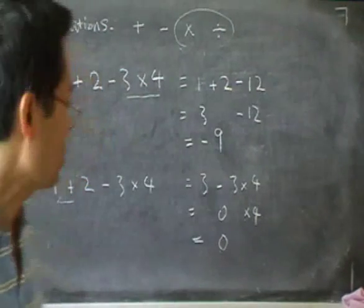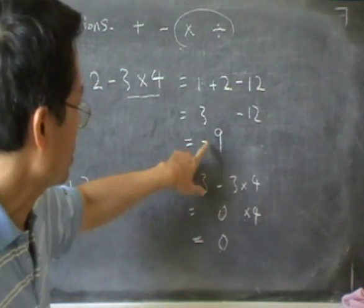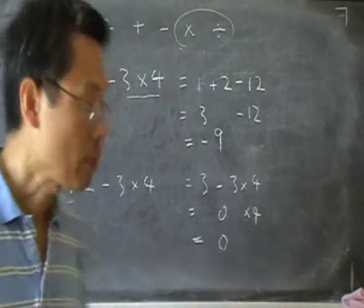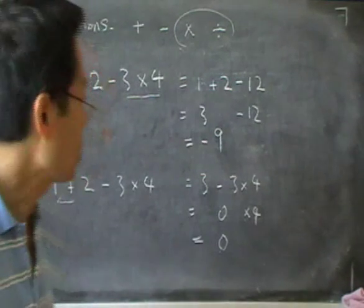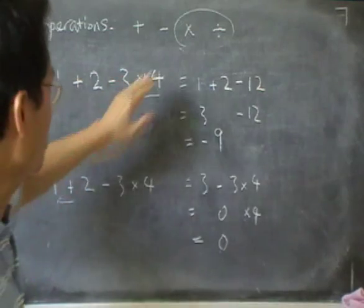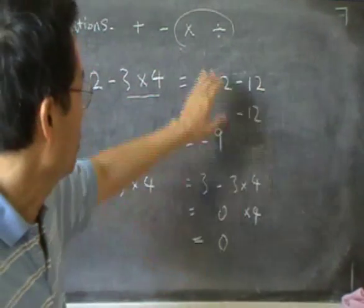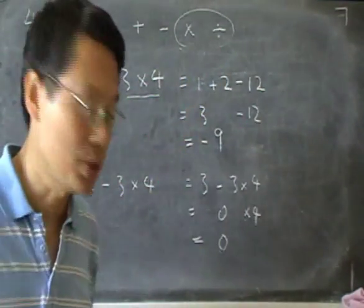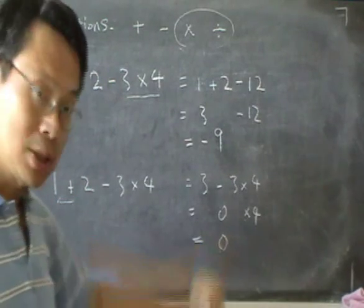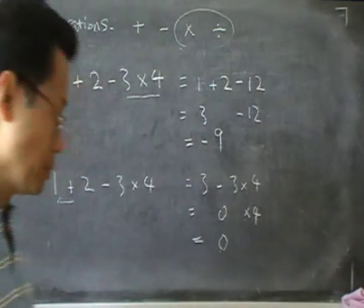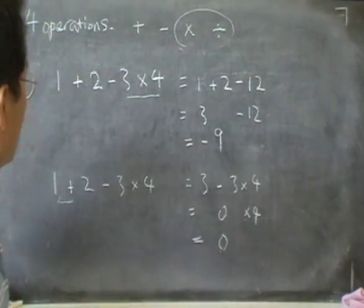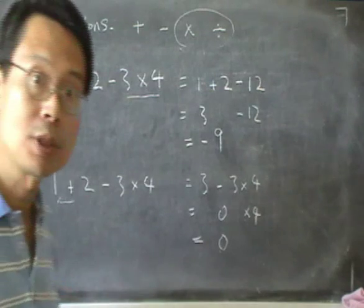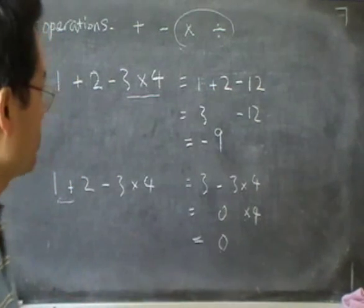You see, I get a completely different answer. Instead of -9, I get 0. So it is important to know that if you don't follow the proper order, if you don't do the times and divide first, your answer is different. And that answer is considered wrong, because the rule of the four operations is that we must do the times and divide first.